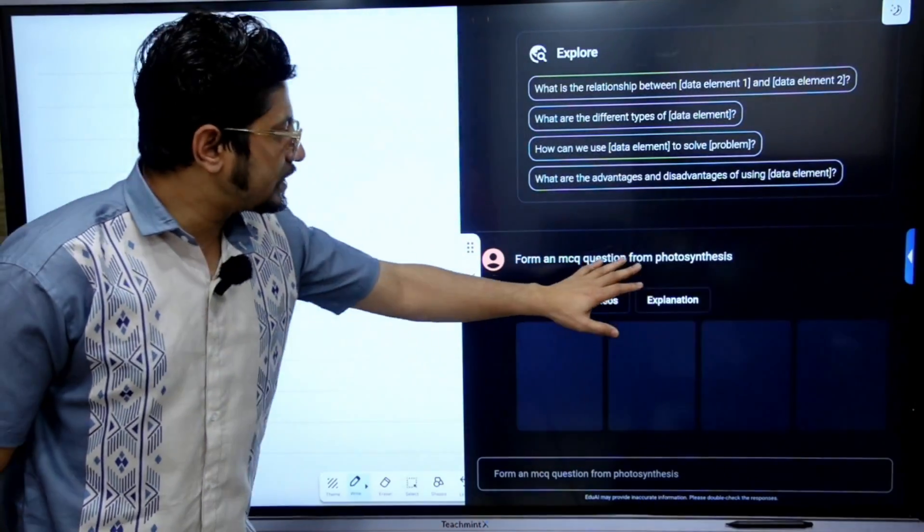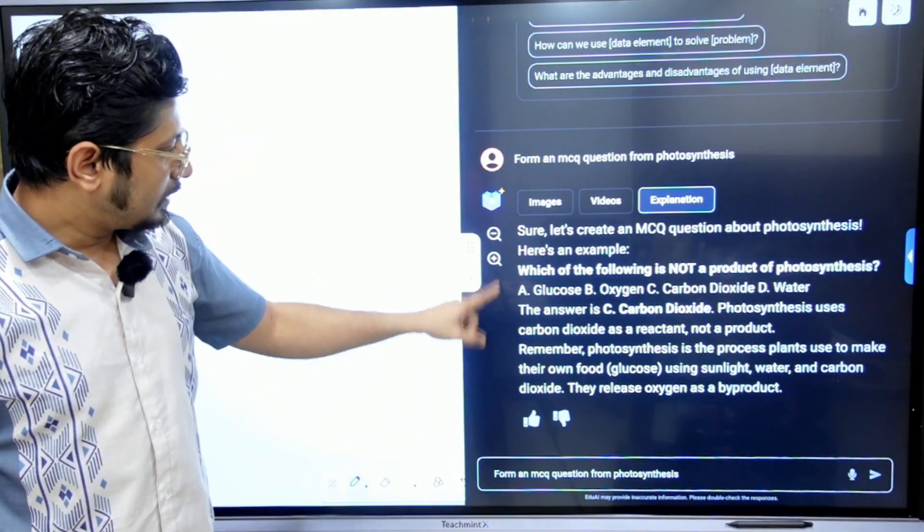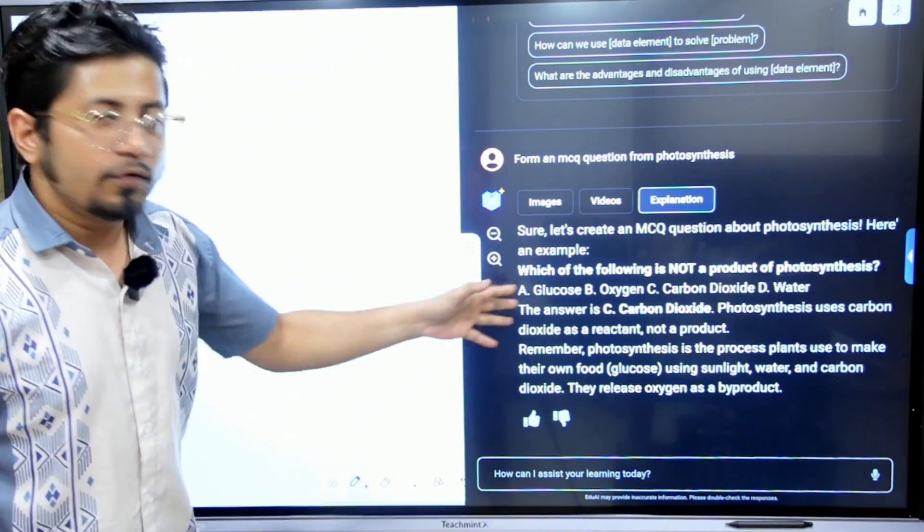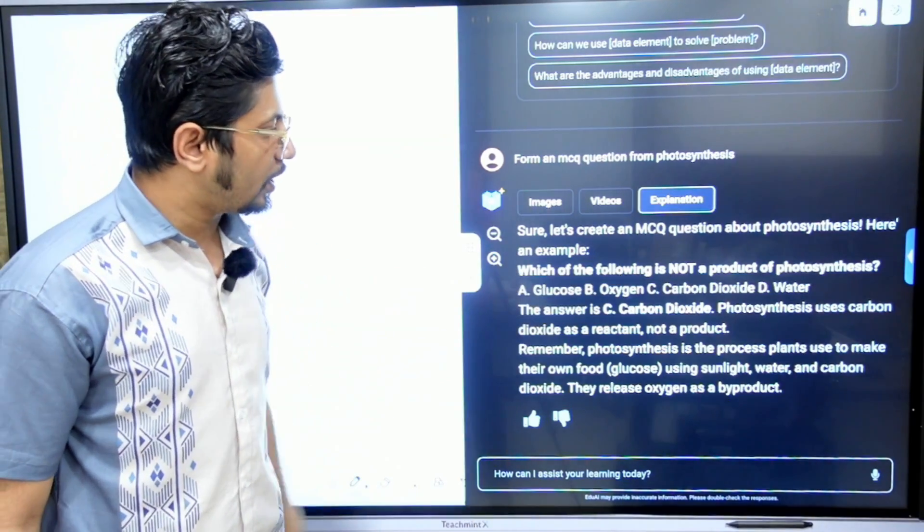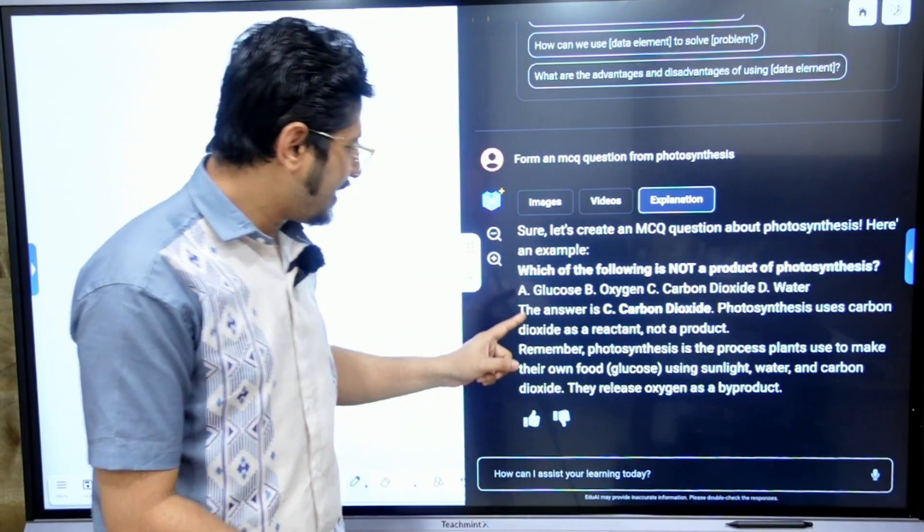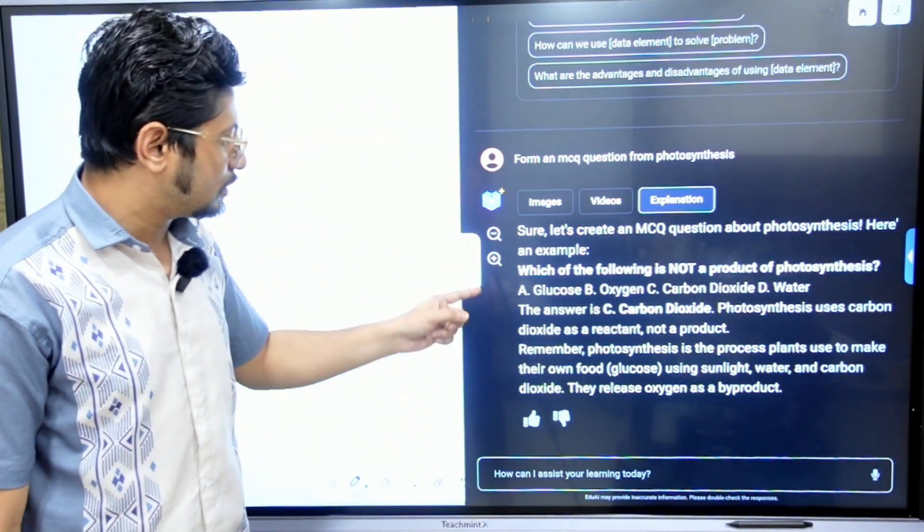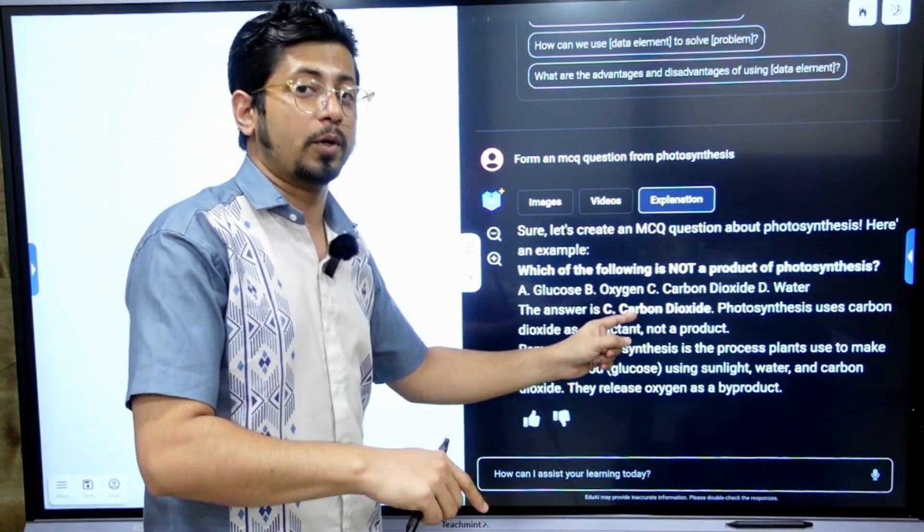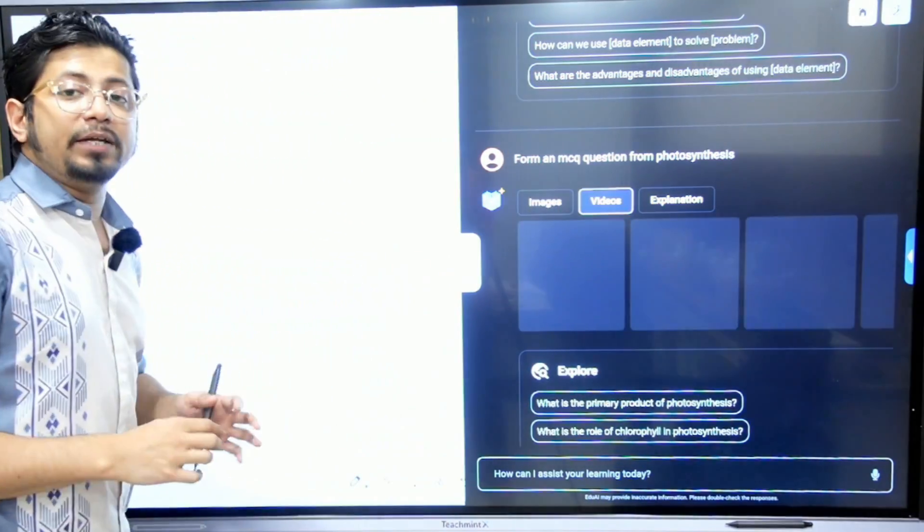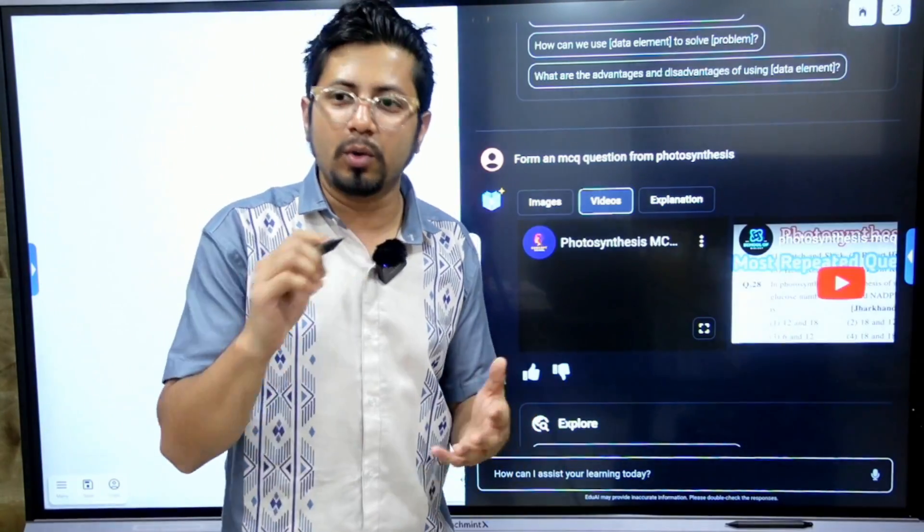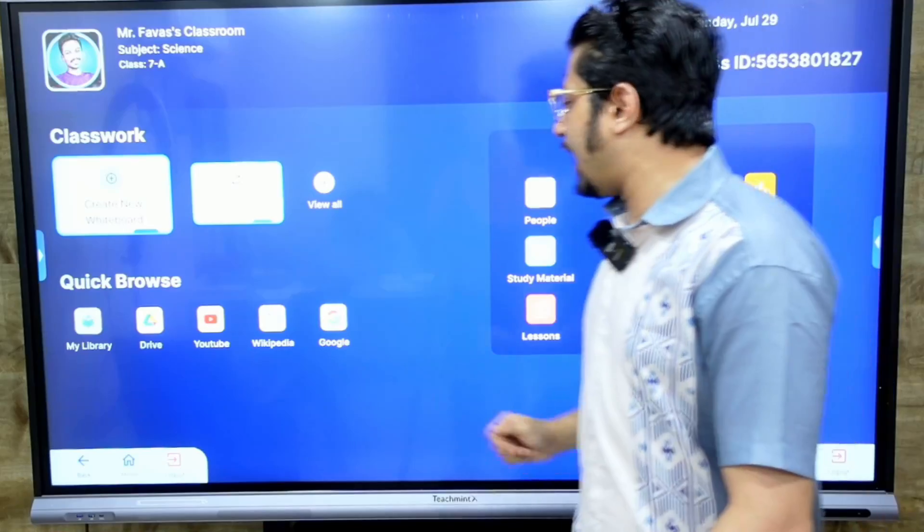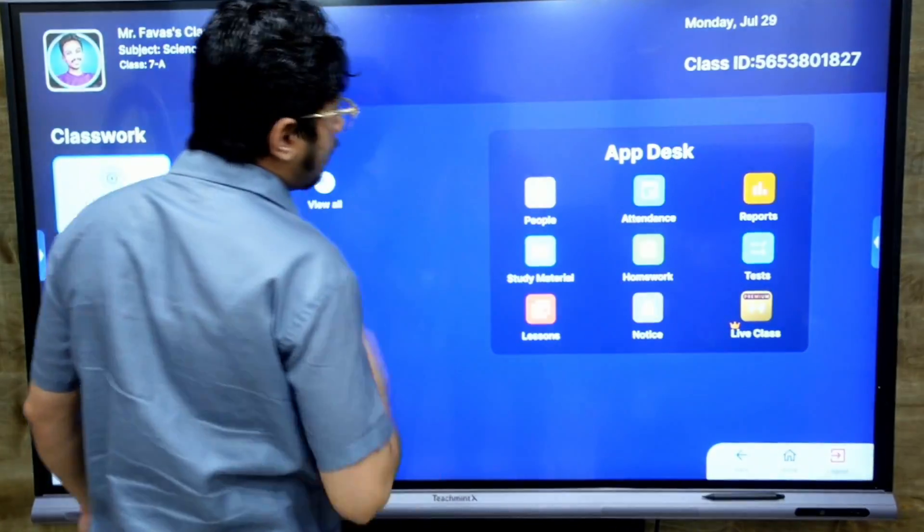Now see if I ask form of MCQ question from photosynthesis you can see that it already form a question for me which of the following is not a product of photosynthesis four options are given A. Glucose B. Oxygen C. Carbon dioxide D. Water not only give me a question but also give me answer explanation the answer is C. Carbon dioxide photosynthesis uses carbon dioxide as a reactant not as a product so this category of explanations you can find you can find videos you can find images and you can prepare your own lesson with it you can note down this basically you can write down the lesson here itself and you can save it for the future use.